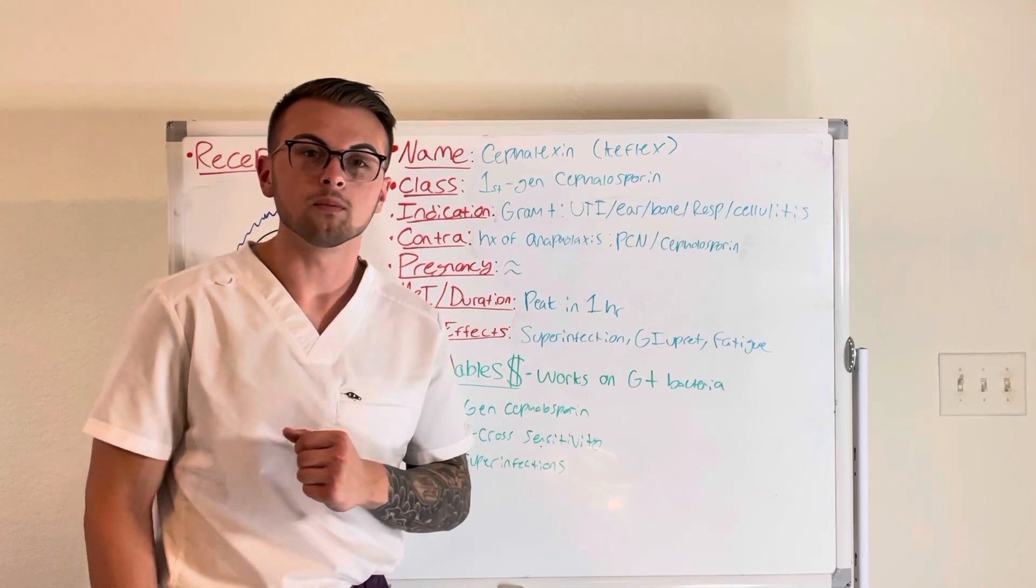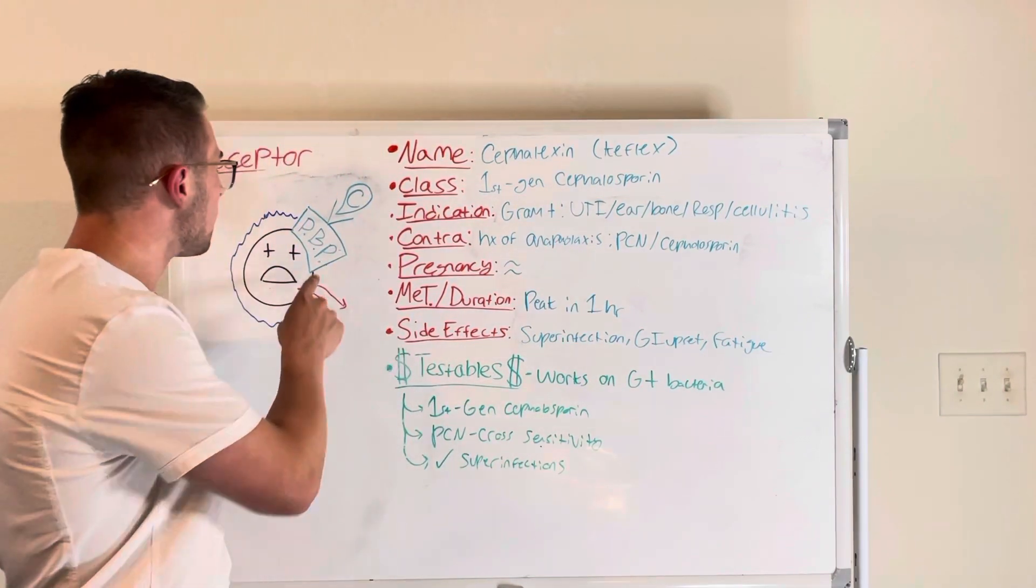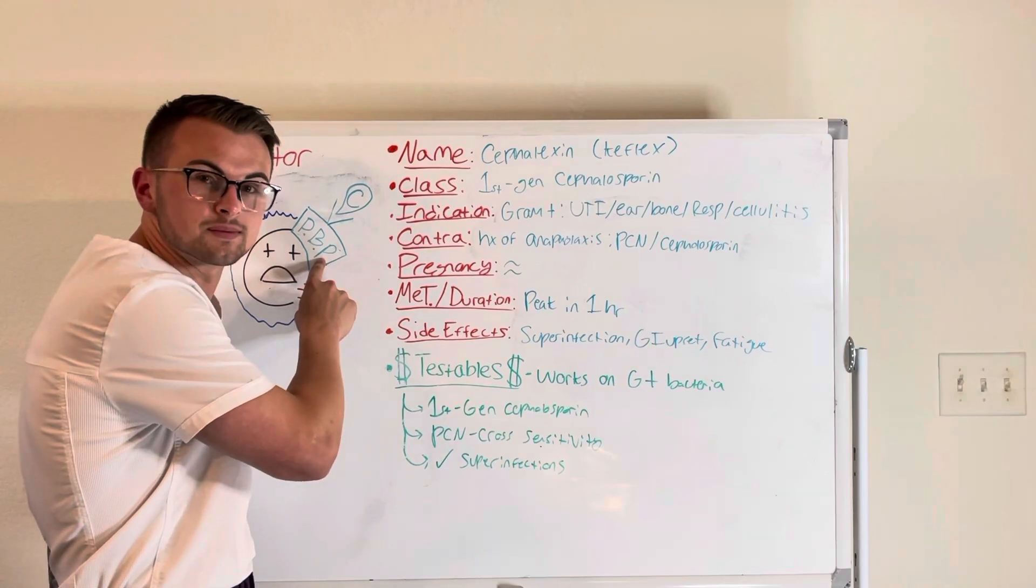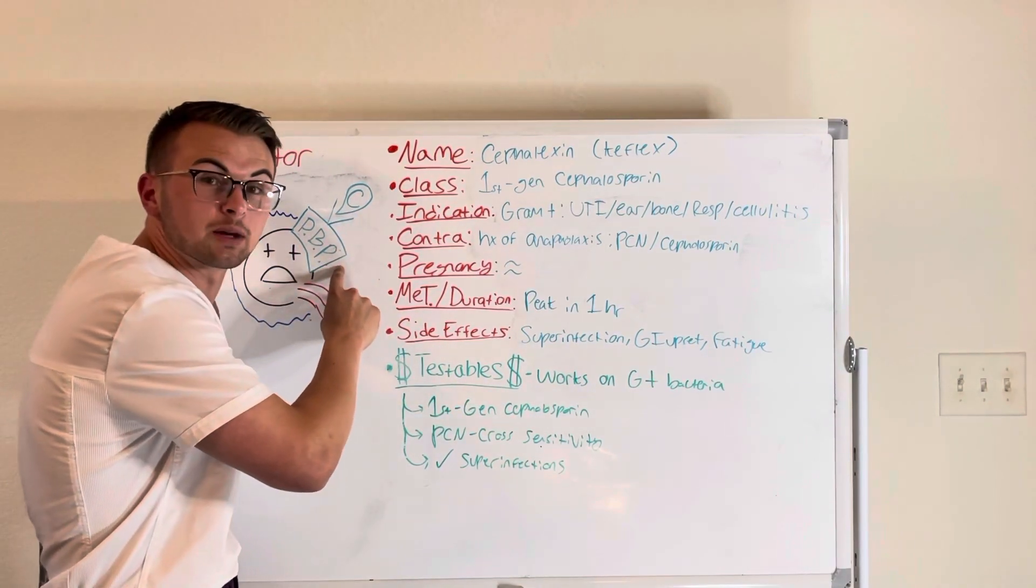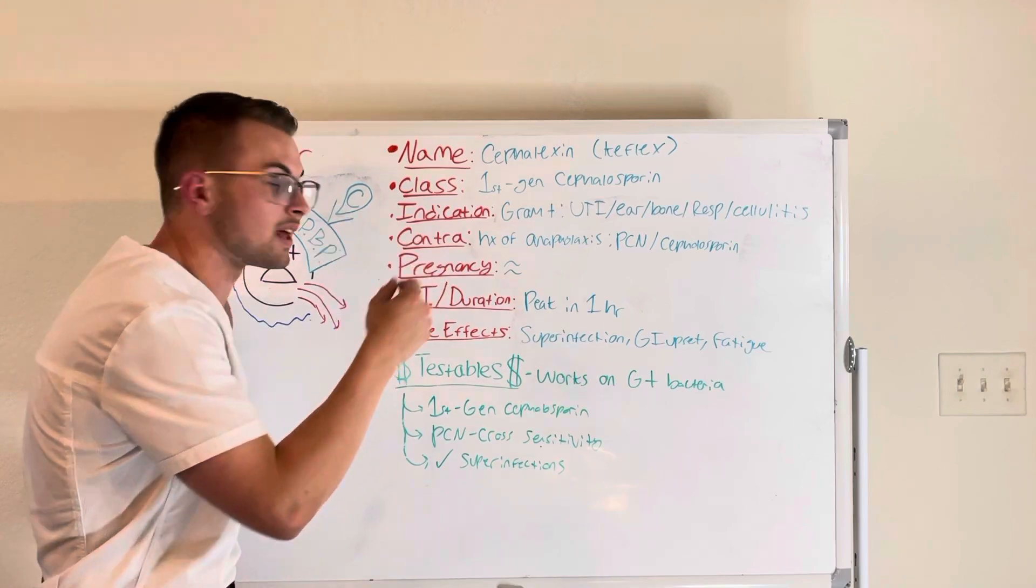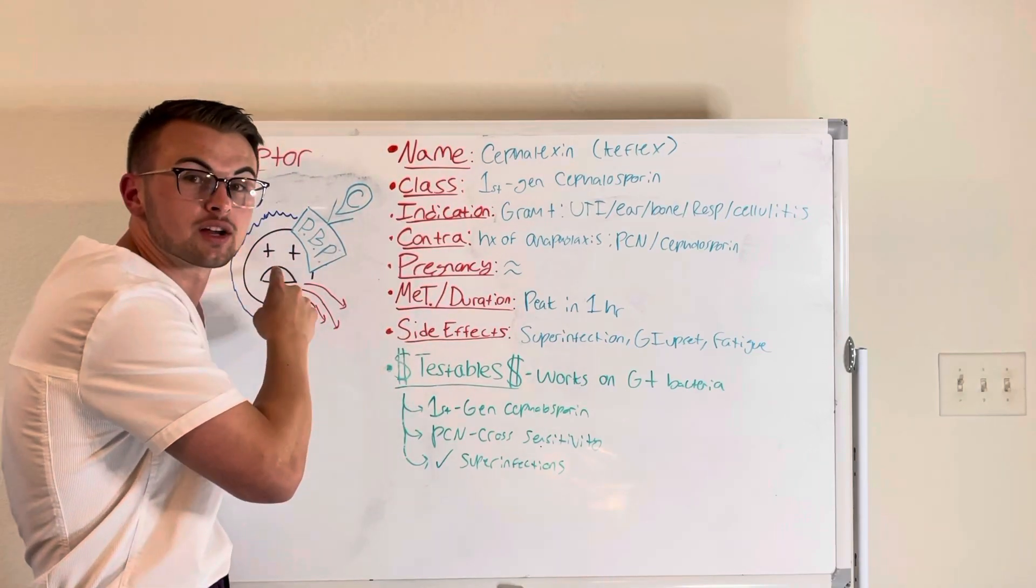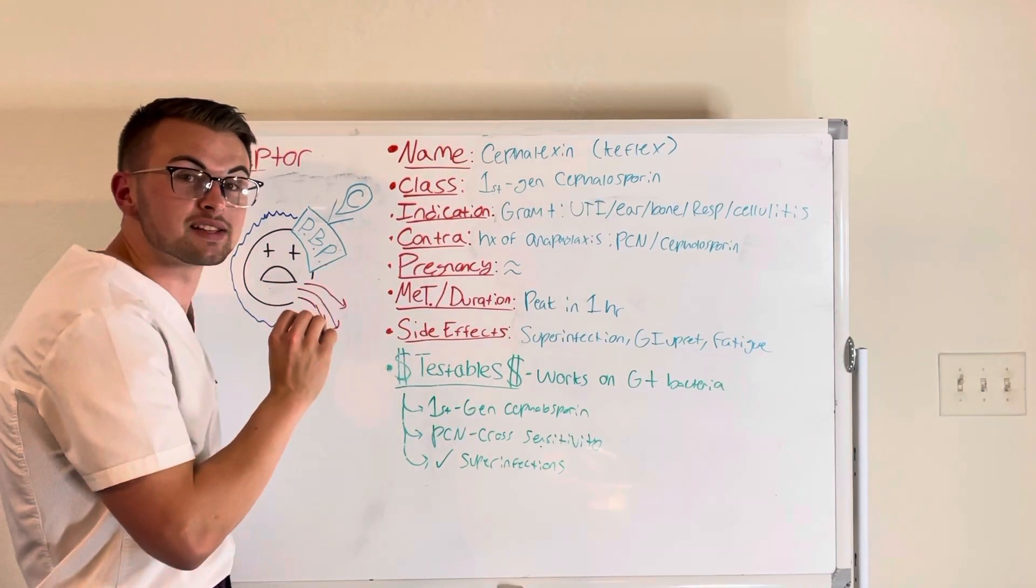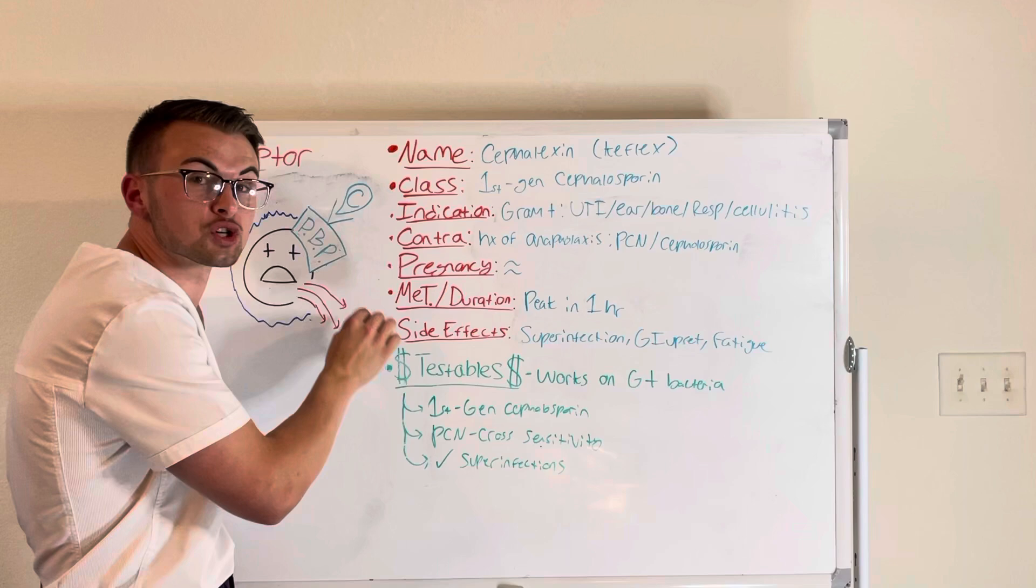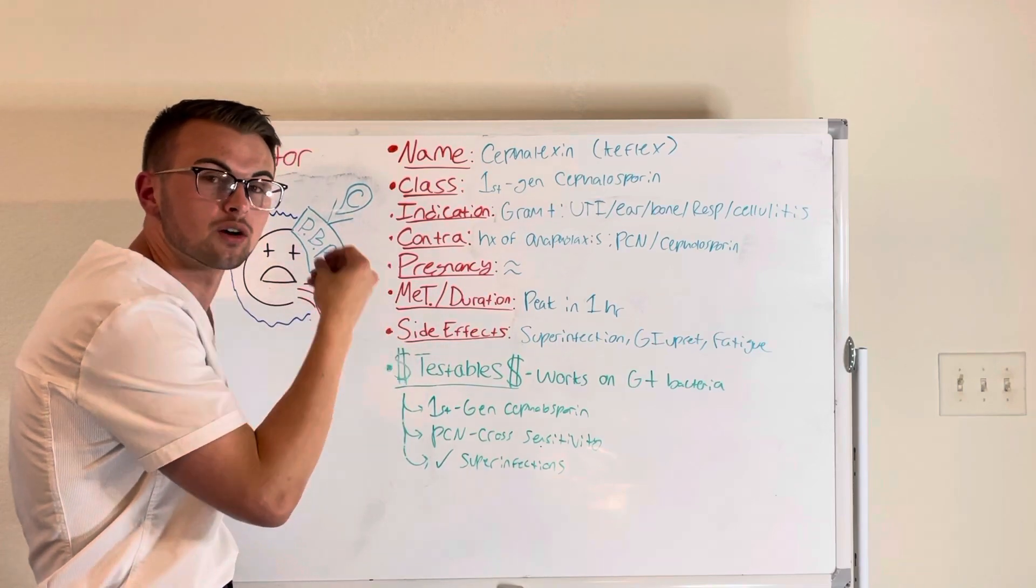We should know that some bacteria have penicillin binding proteins. Cephalexin binds to these penicillin binding proteins which inhibit gram-positive bacteria from building their outer peptidoglycan cell wall. This means that the cell will rupture its contents and the bacteria will die.